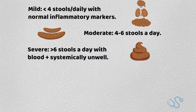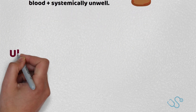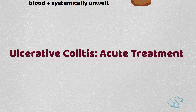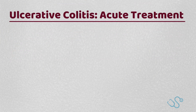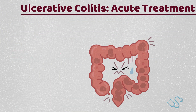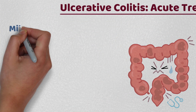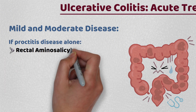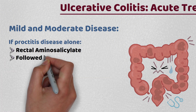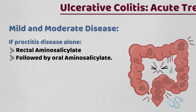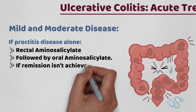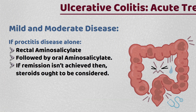This leads on to the treatment of UC flare-ups, which depends on the site of disease and its severity. For mild or moderate disease with proctitis alone, the first-line treatment is rectal aminosalicylates, an example being mesalazine. If this doesn't work, it's usually oral aminosalicylates, and if remission isn't achieved, steroids ought to be considered.